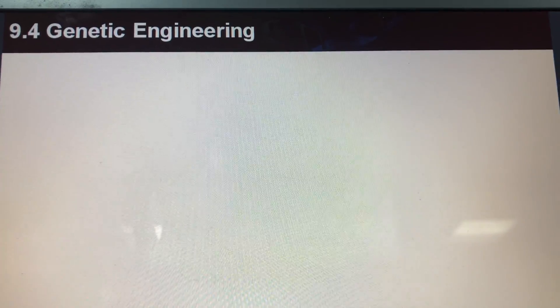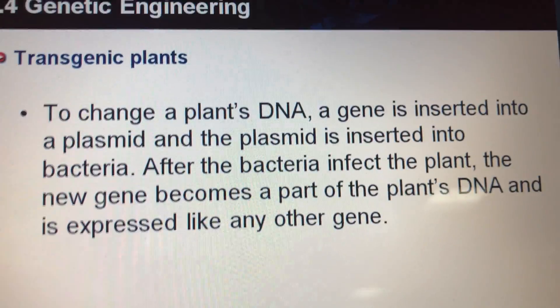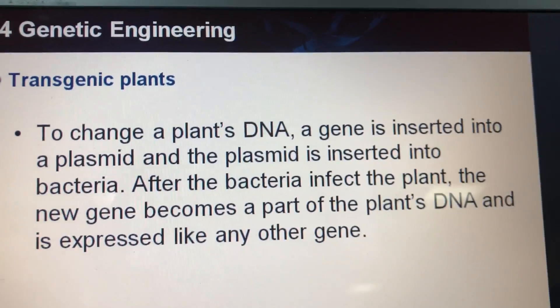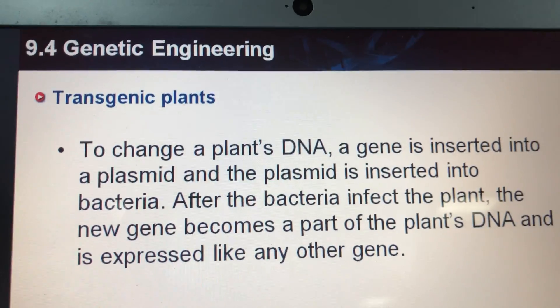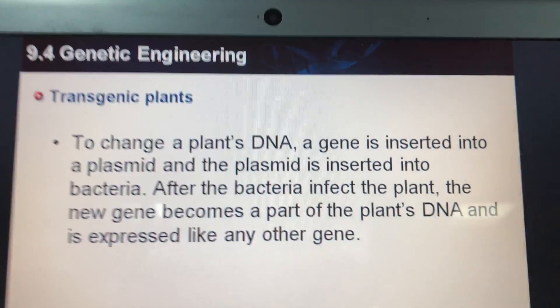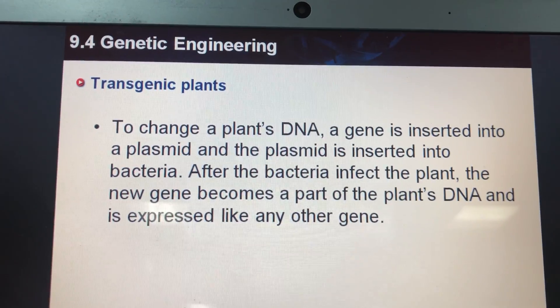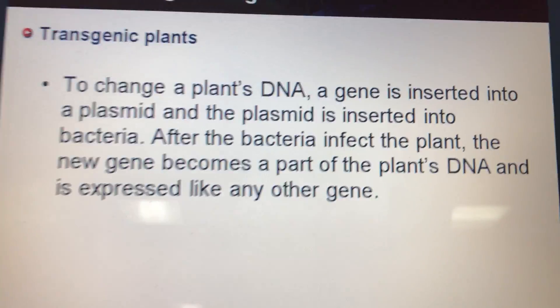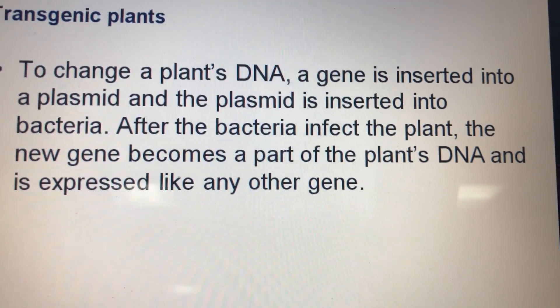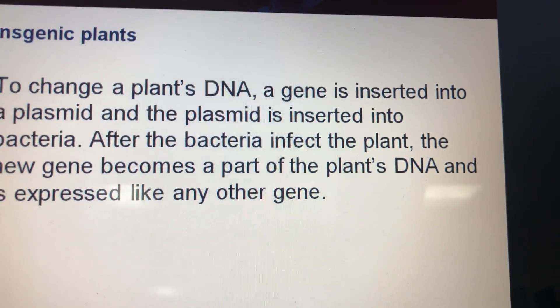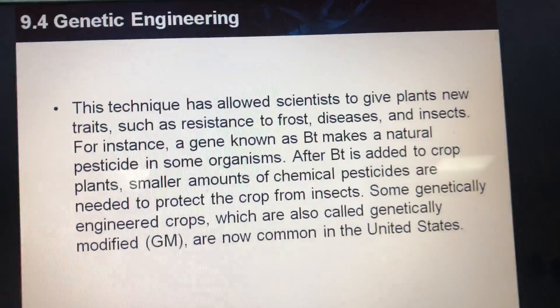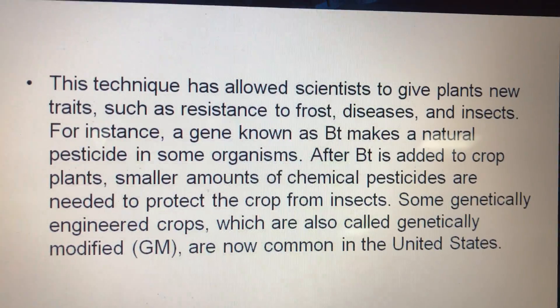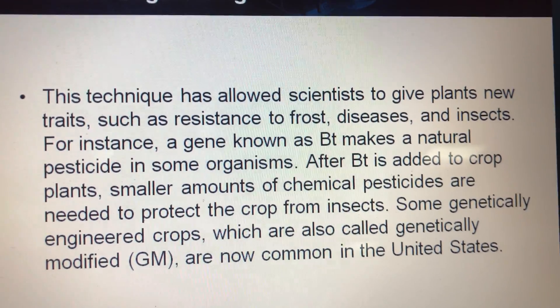The plasmids are inserted back into the bacteria, and the transgenic bacteria produce human insulin, which is collected and used to treat people with diabetes. Transgenic plants are another example — scientists change plant DNA by inserting a gene into the plasmid of bacteria, and after the bacteria infect the plant, the new gene becomes part of the plant's DNA and is expressed like any other gene.